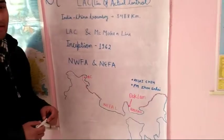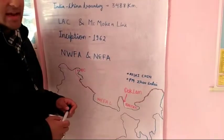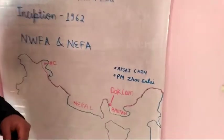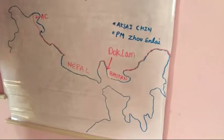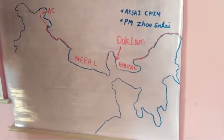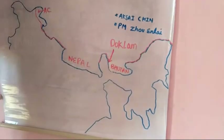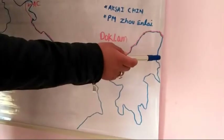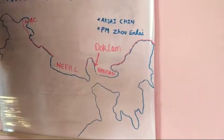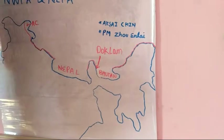Recently there was a standoff between India and China in the North-Eastern state of Arunachal Pradesh. It was resolved by bilateral ties between both countries, in which India gave a proposal to China to destroy its military construction near Arunachal Pradesh, as India was perceiving it as a danger.